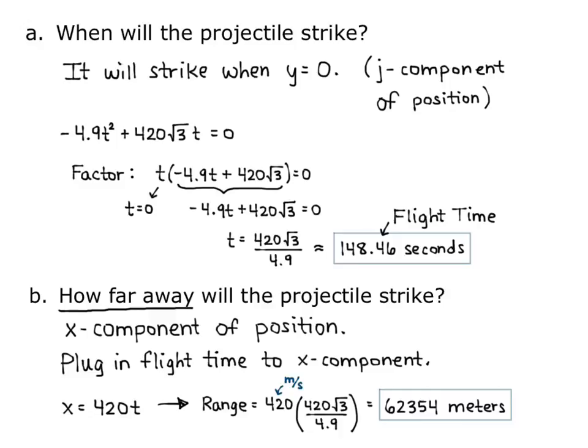The 420 in the x position was meters per second, and the flight time was in seconds, and that's how we end up with meters as the answer.